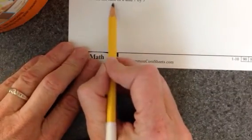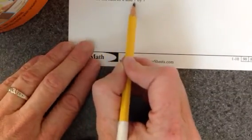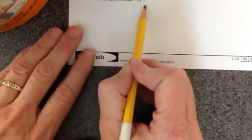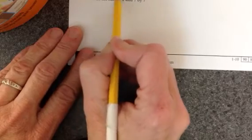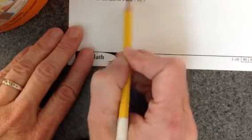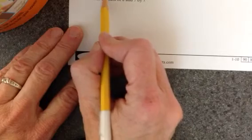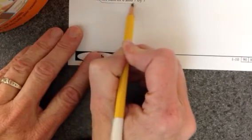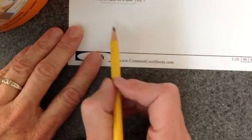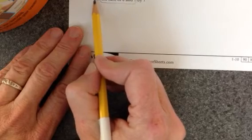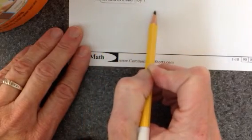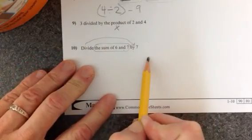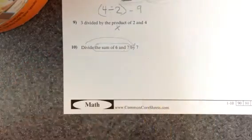And the last one, divide the sum of 6 and 7 by 7. Now this one's kind of tricky because here I have the divide by 7. They are not written the same. They're not written by each other. So I have the sum of 6 and 7. So we're taking the sum of 6 and 7 and then dividing by 7 after the fact.